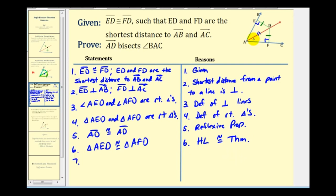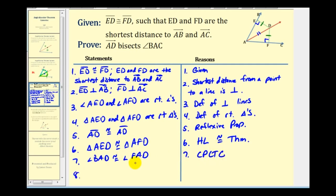Now we know that the corresponding parts of these two triangles are congruent, so angle BAD is congruent to angle FAD. This is because corresponding parts of congruent triangles are also congruent. And if these two angles are congruent, ray AD must bisect the larger blue angle, angle BAC, by definition of angle bisector.